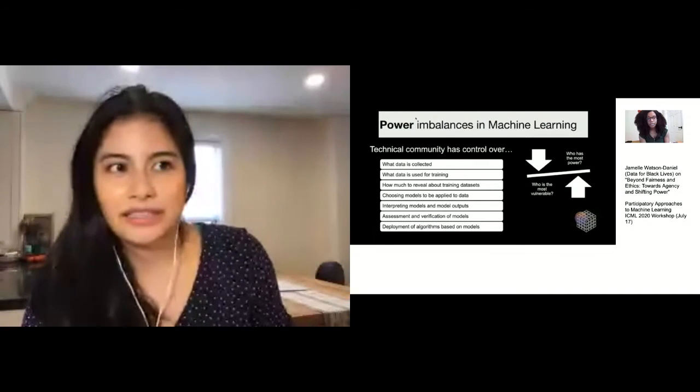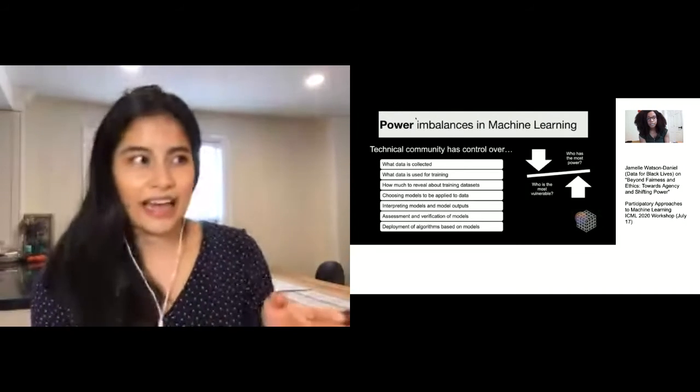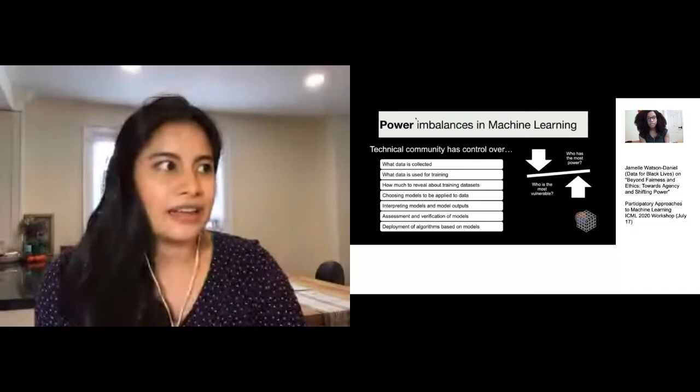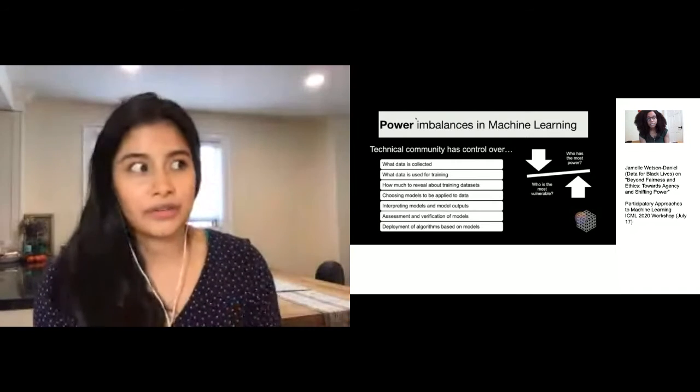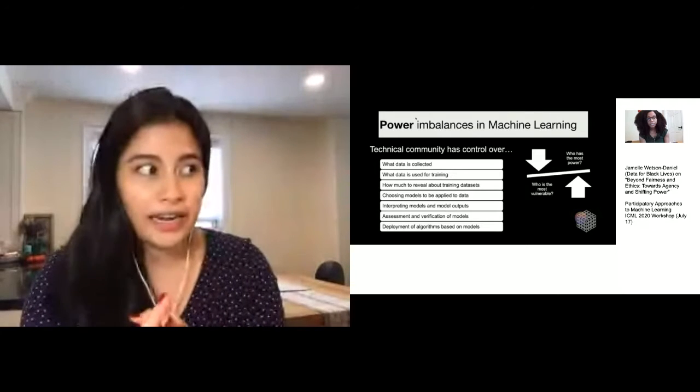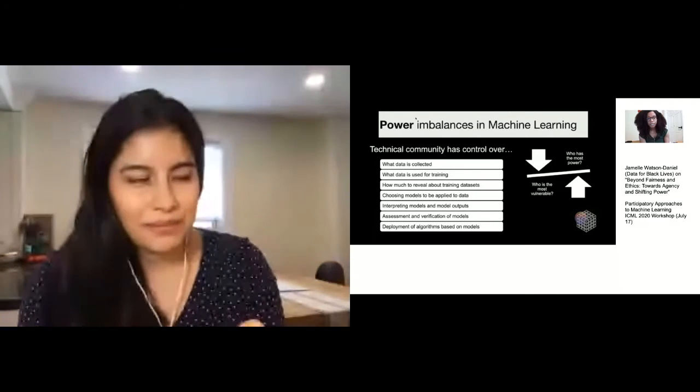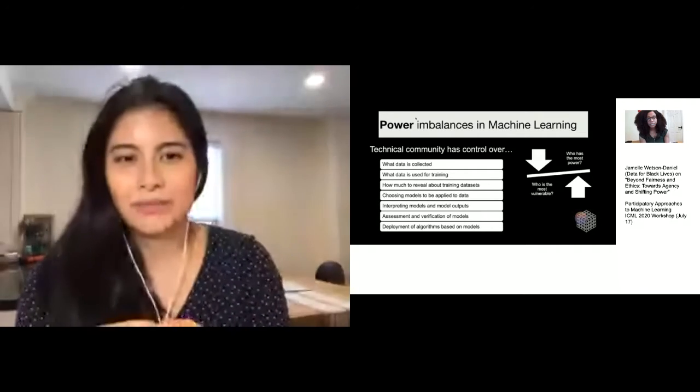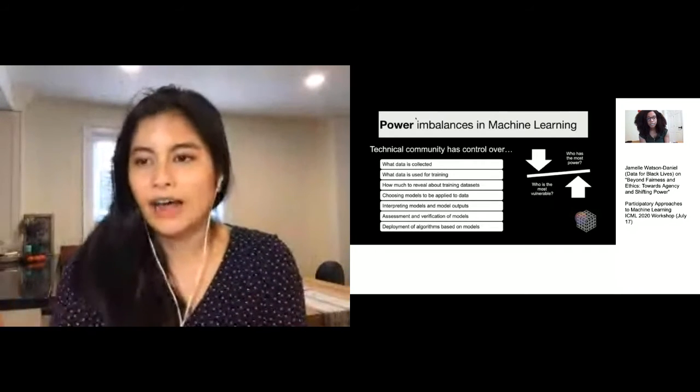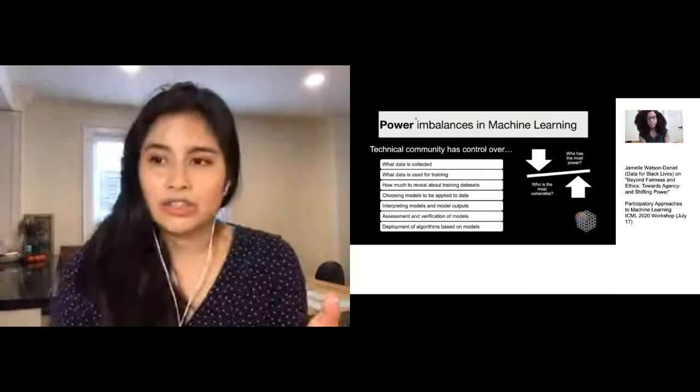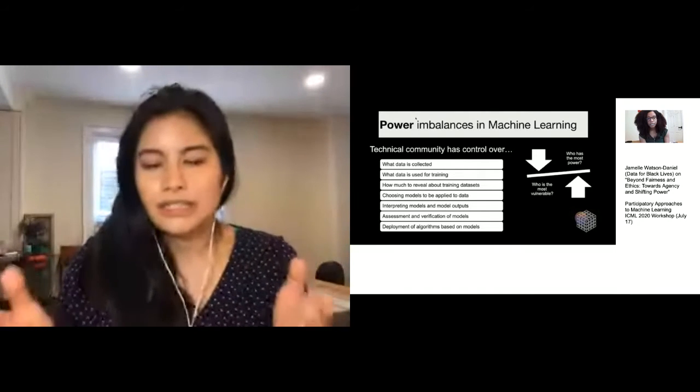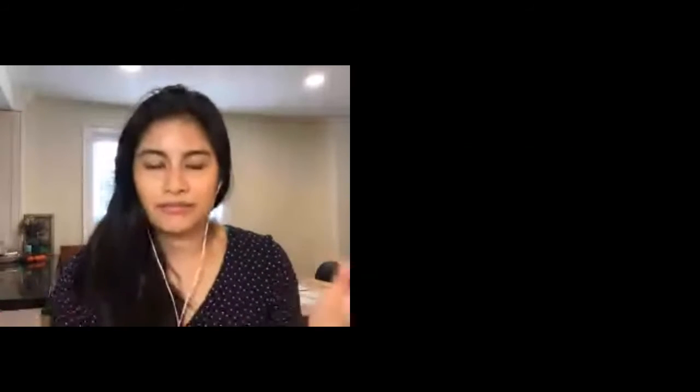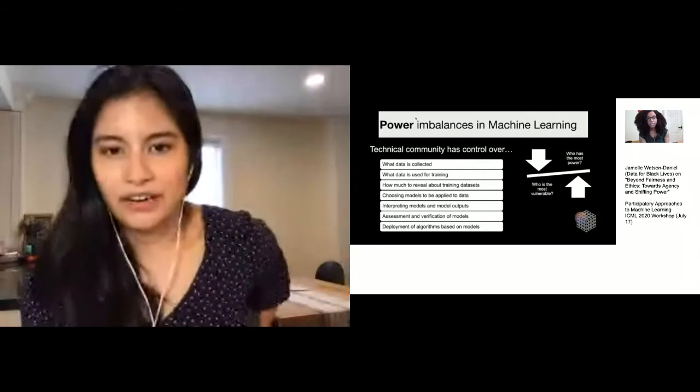On Friday I caught a little bit of the Participatory Approaches to Machine Learning conference, and Jamel Watson Daniel from Data for Black Lives presented this slide that was so perfect. I just put the whole slide in here. She really talks about these different power imbalances in machine learning. She lists all these things the technical community has control over: what data is being collected, what data is used for training, how much to reveal about training data sets, choosing models to be applied to data, interpreting models and model outputs, assessment and verification of models, deployment of algorithms based on models. I'd say even past this, you make a lot of choices around how much weight you should give one variable, or what language you're going to choose, or where will this be stored. There's so many choices that have real effects down the line. You have so much power as the builders.